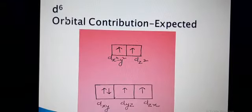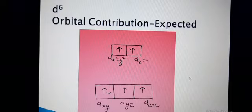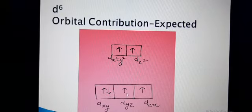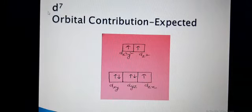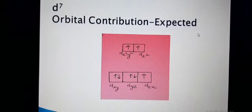For D6, the next electron goes to the T2G level. Because this is a high spin complex, there are the maximum number of unpaired electrons. This electron does give orbital contribution. The three conditions are fulfilled, so orbital contribution is expected for D6. For D7, the three conditions are also fulfilled, so orbital contribution is expected.